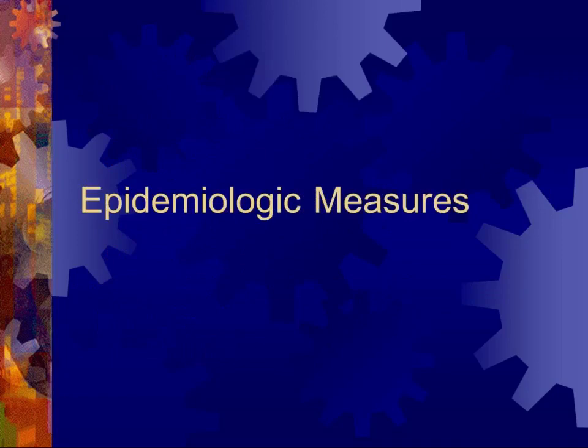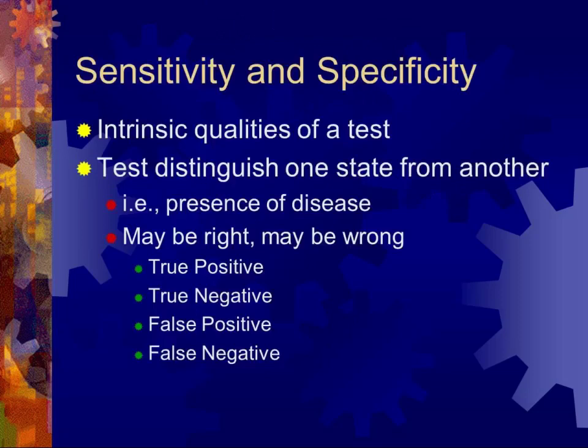We're now going to turn for the rest of the time to talking about several epidemiological measures, starting with sensitivity and specificity. The most important aspect to remember is that these are intrinsic qualities of the test itself, as opposed to predictive values — which look at a particular quality of a test in a particular population. From the 2x2 table analysis we determine true positives, true negatives, false positives, and false negatives.